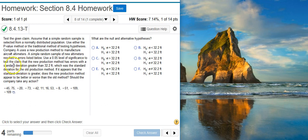What is the claim being made here? Well, in our problem statement we see that the claim is that the new production method has errors with a standard deviation greater than 32.2. So we want the answer option where sigma is greater than 32.2. That's going to be answer option A.